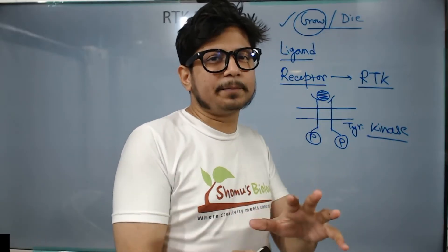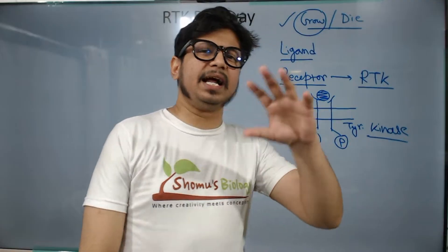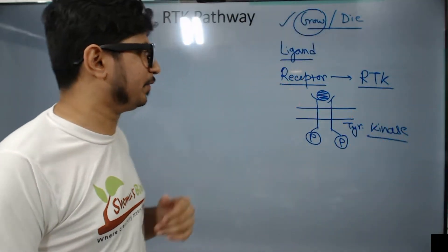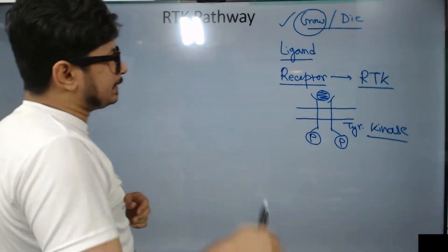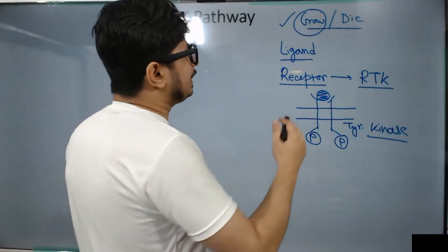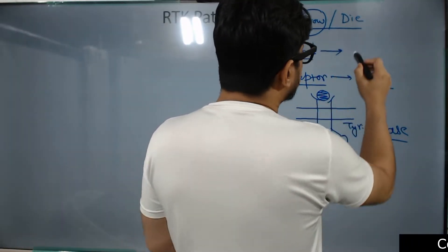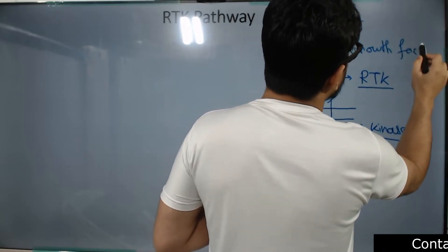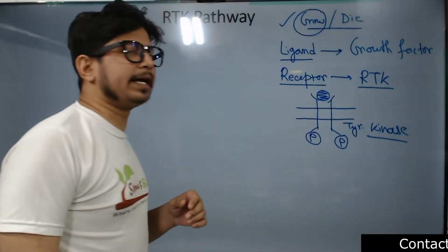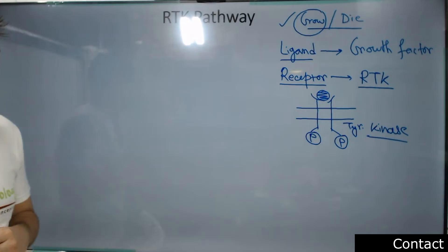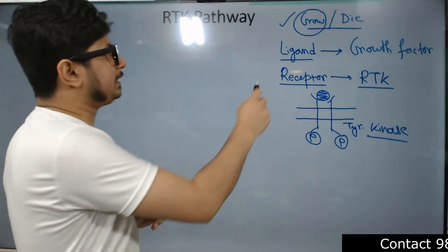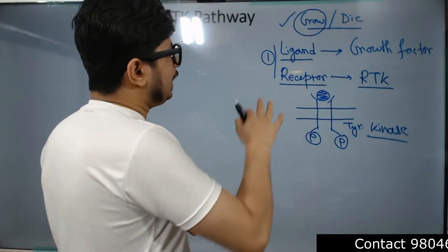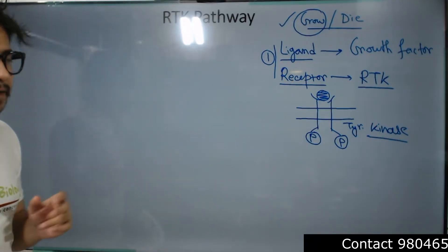This phosphorylation activates the RTK and then the further process continues. It has tyrosine-rich residues and kinase activity. The tyrosine amino acid is present on the cytosolic side of the receptor and the enzyme has kinase activity - that is why it is called receptor tyrosine kinase. Growth factors act as the ligand for the tyrosine kinase pathway.